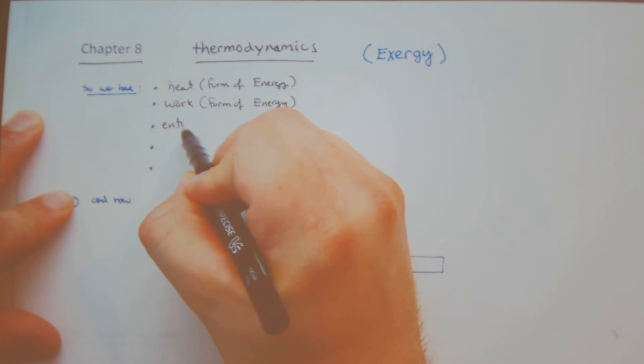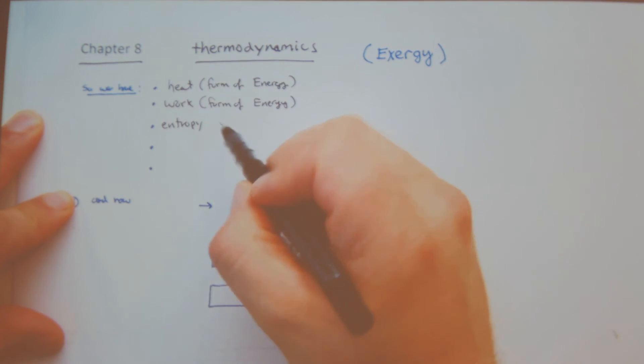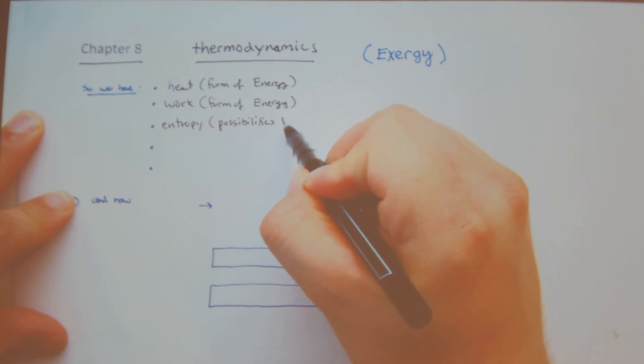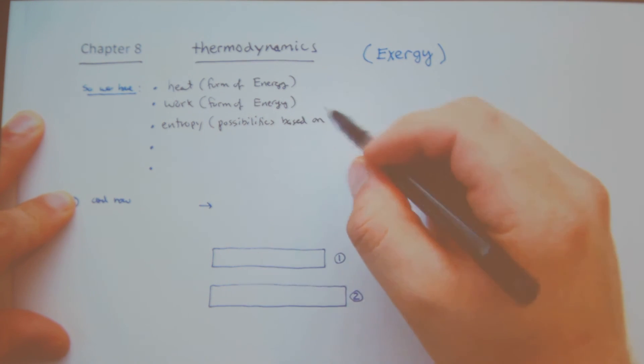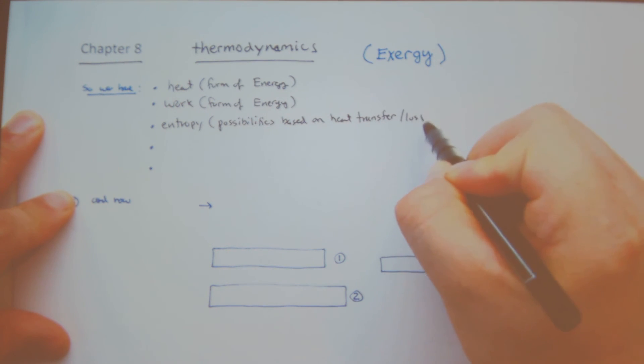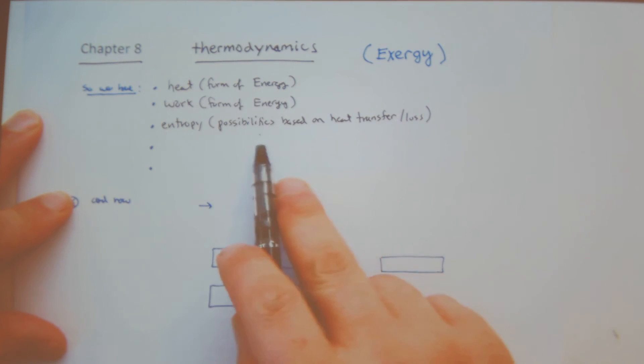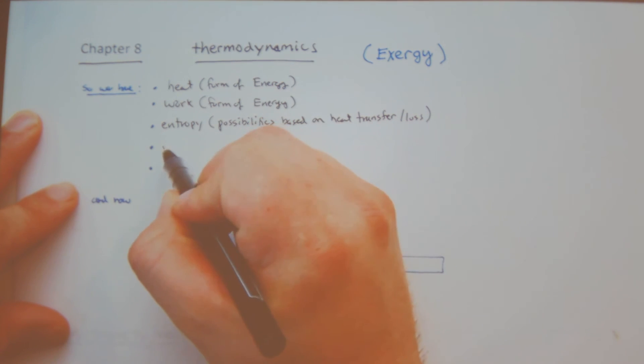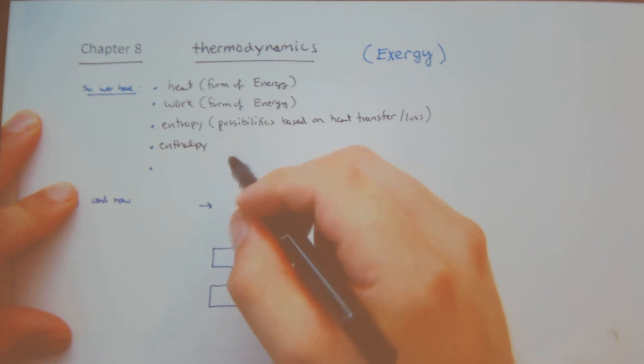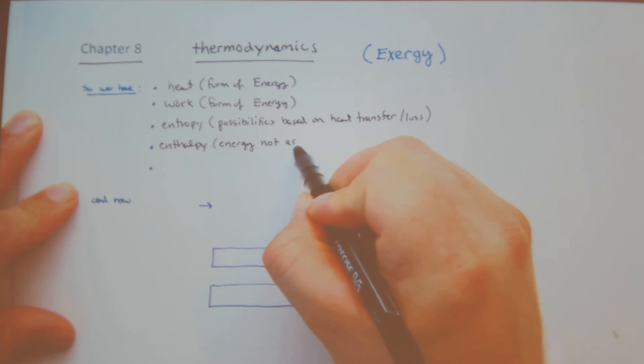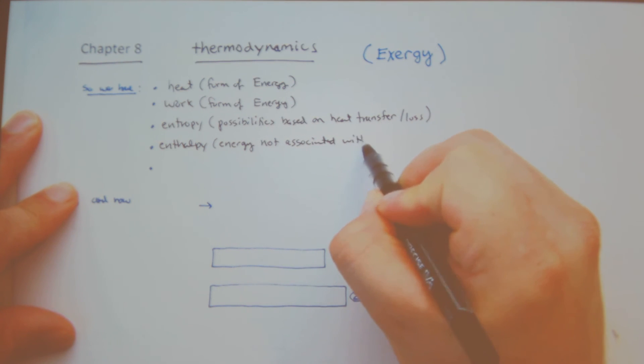Entropy, possibilities based on heat transfer. Now of course, entropy is also associated with the change of mass of a system, but I'm just going to write it out as how we've written it out as Q reversible heat, so possibilities based on heat transfer.